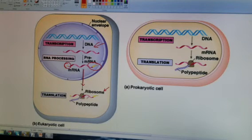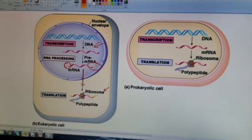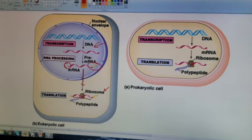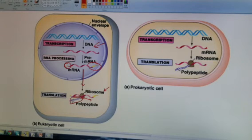During translation, the RNA is in between the large subunit and the small subunit of the ribosome. As the ribosome moves down the messenger RNA, we get a growing strand of a polypeptide.